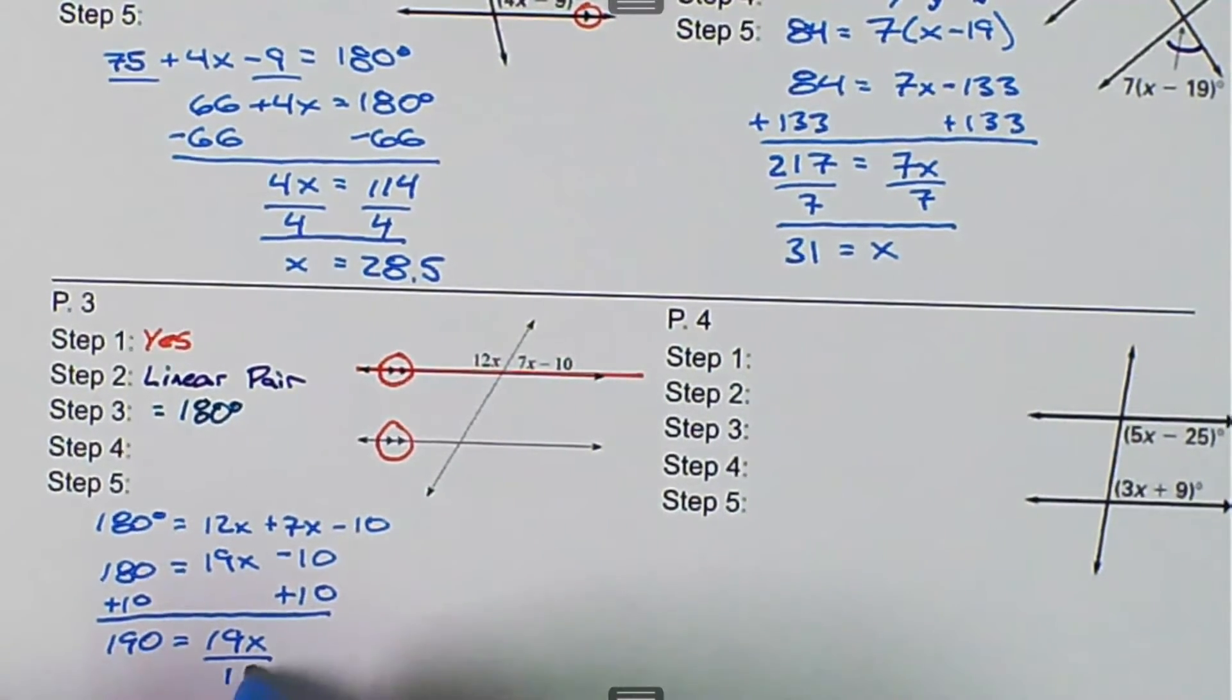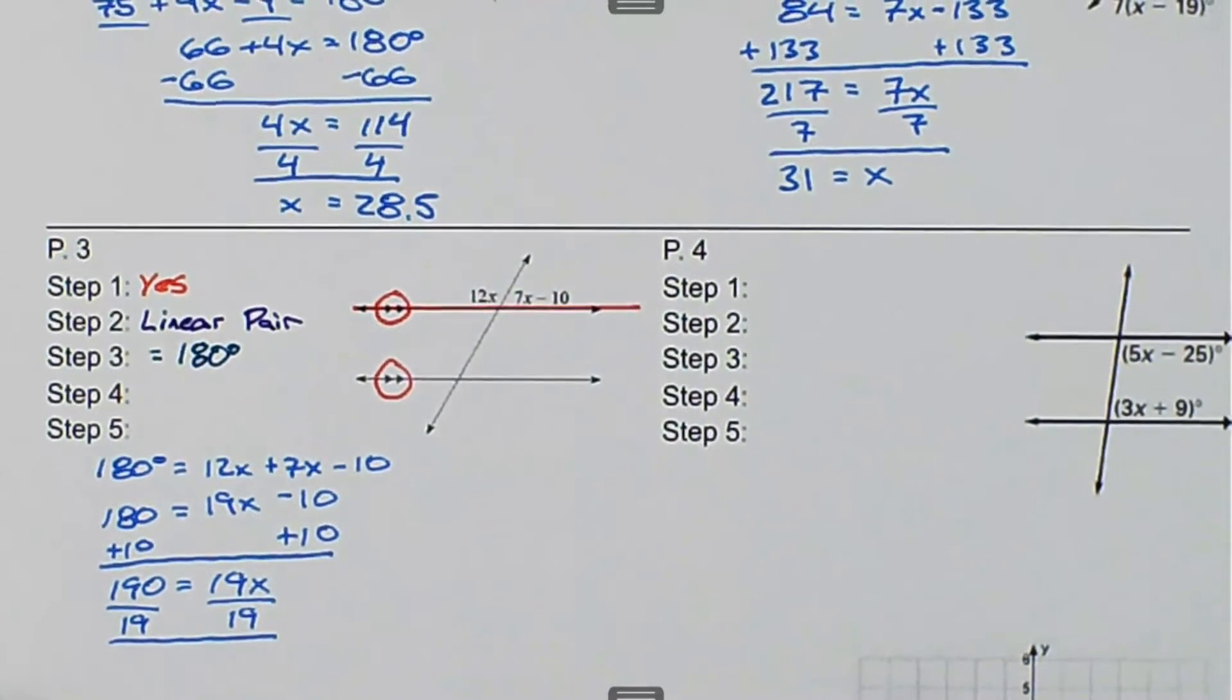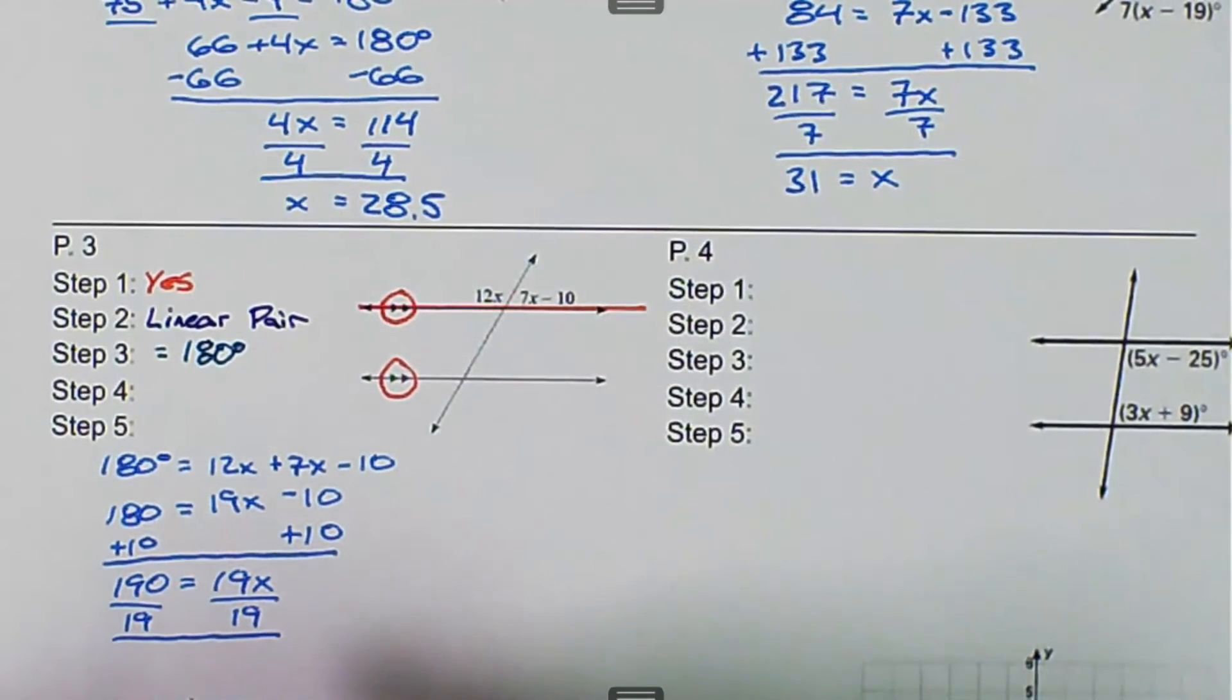And then we divide both sides by 19 for the division property of equality. And then we end up with 10 is equal to x.